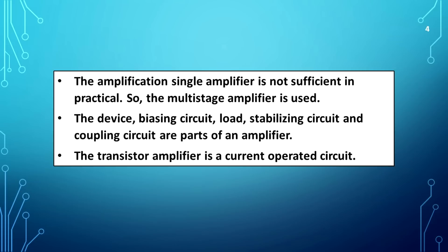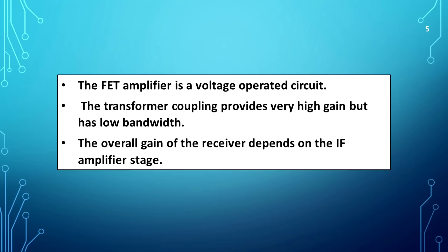The transistor amplifier is a current operated circuit. The FET amplifier is a voltage operated circuit. The transformer coupling provides very high gain but has low bandwidth. The overall gain of the receiver depends on the IF amplifier stage.